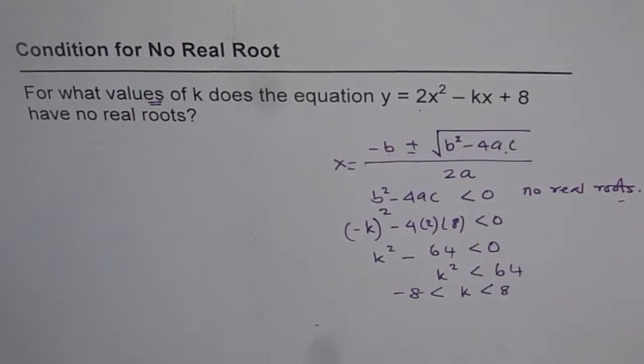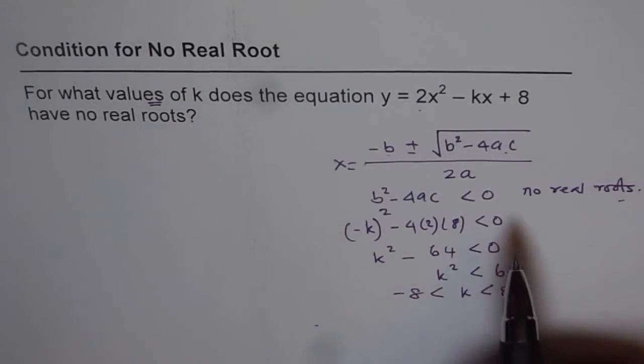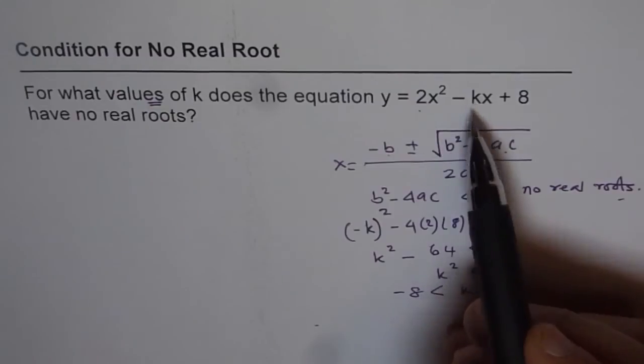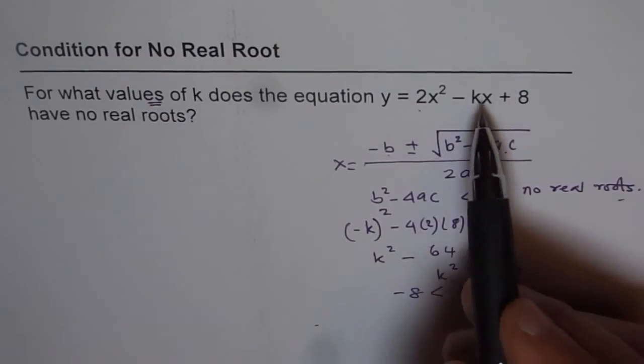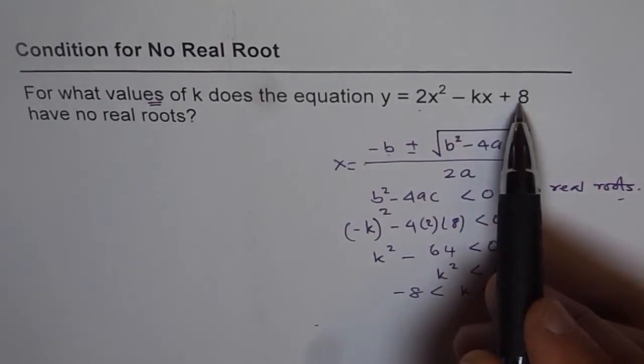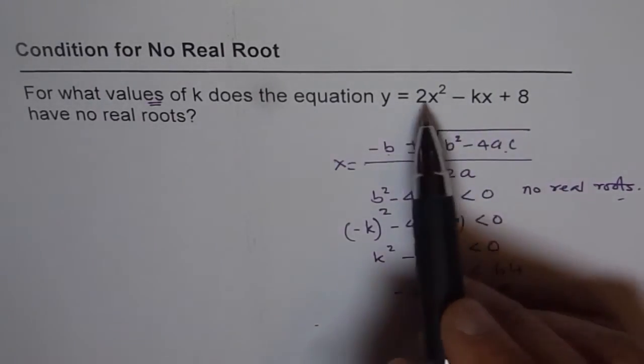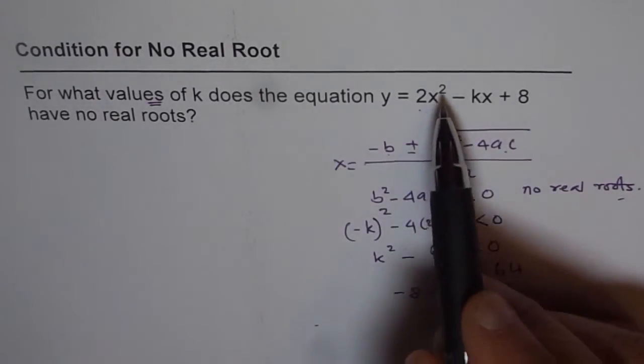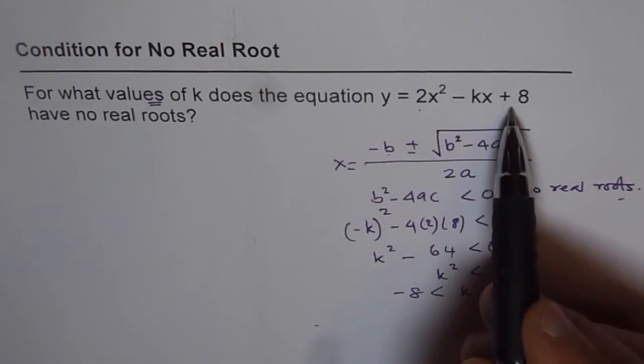So what you can also do is test. If you write k as some value, let's say 0 itself, then you have 2x² + 8. Now if you try to solve it, 2x² = -8, square can never be negative. So that is a good test point.